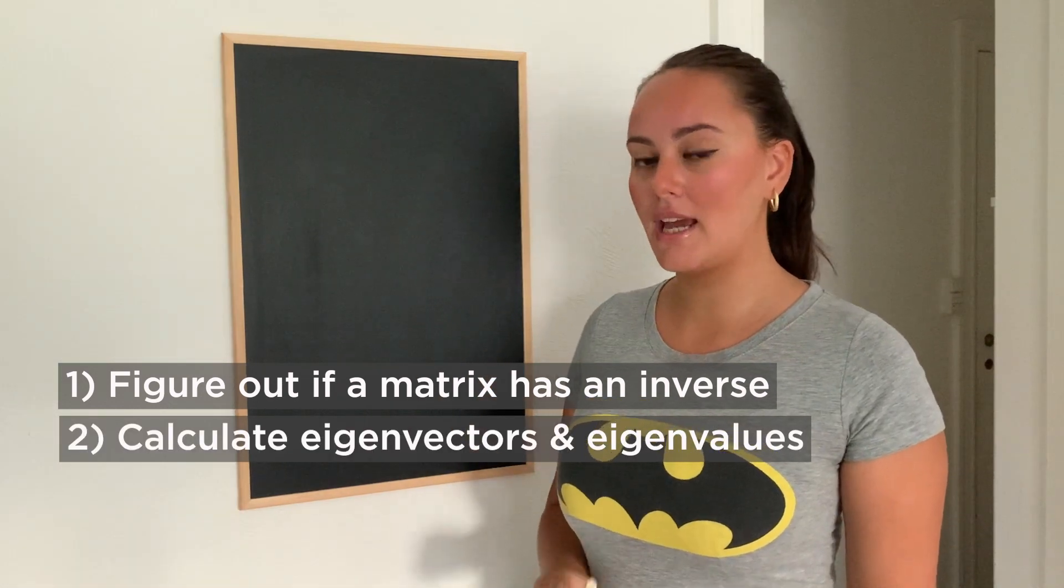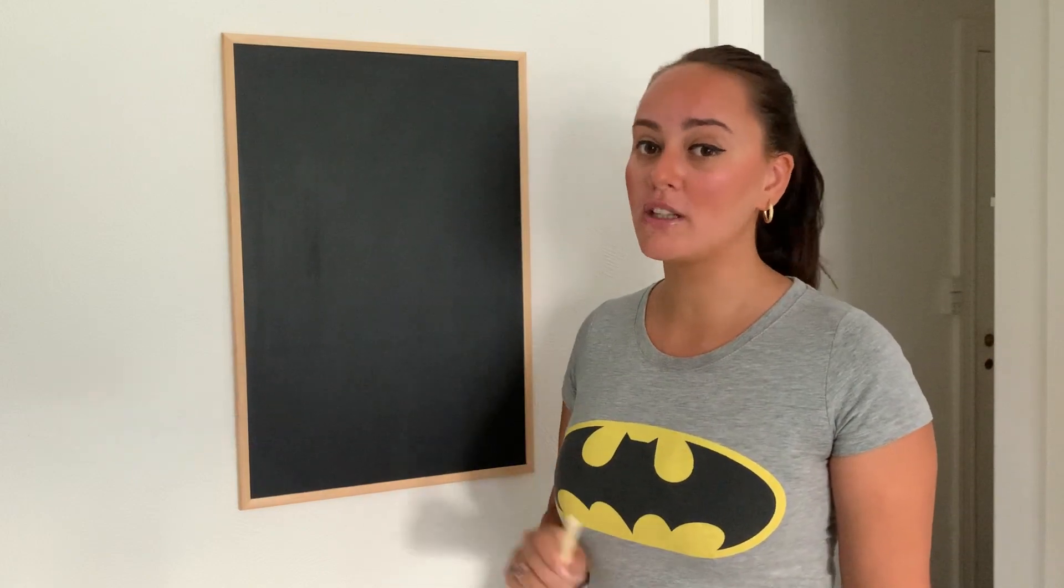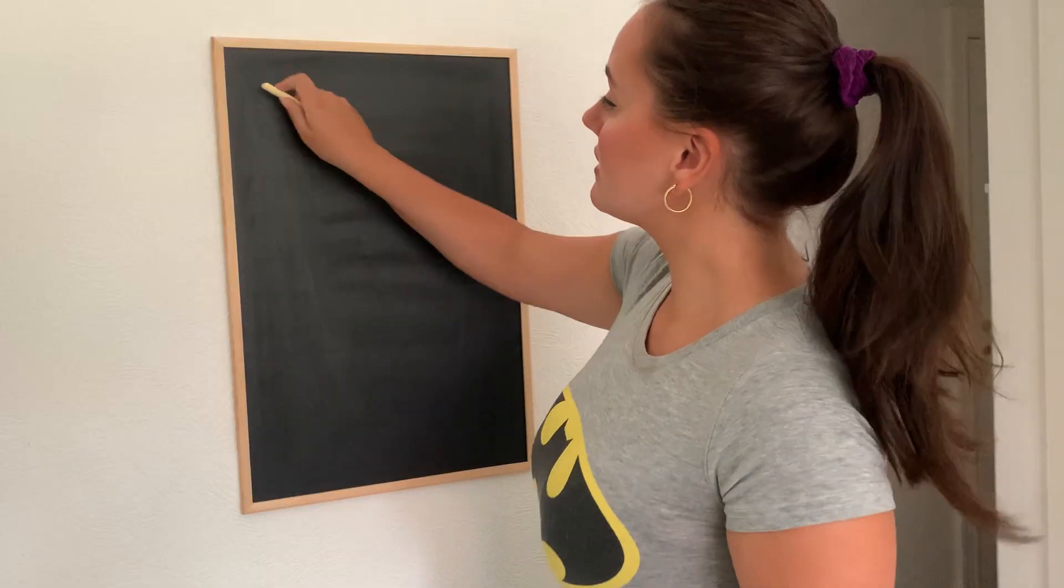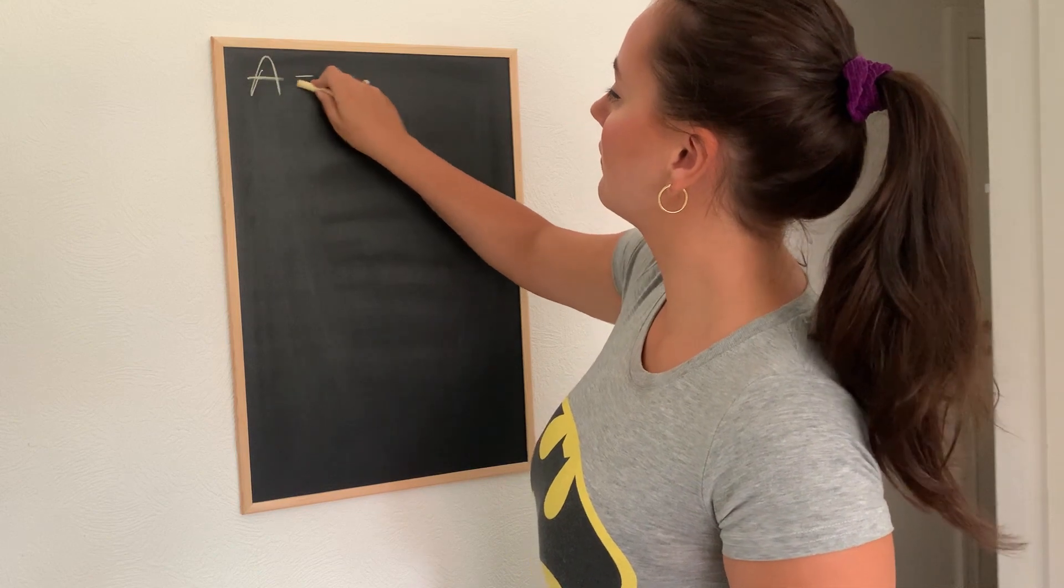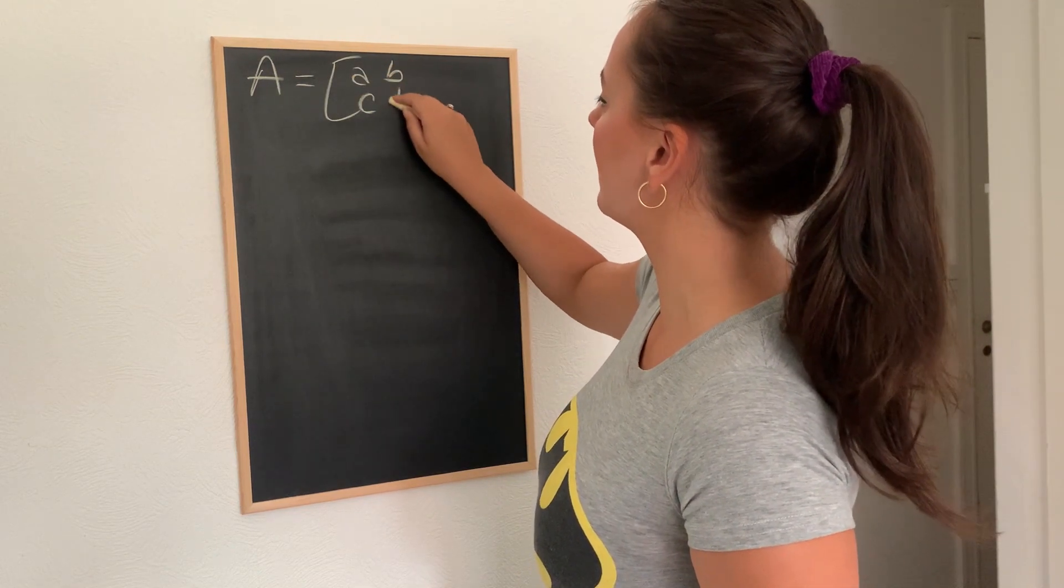But let's stick to determinants today and figure out how to calculate a determinant of a 2x2 matrix. So let's say we have matrix A that has the element A, B, C, and D.